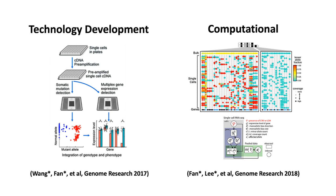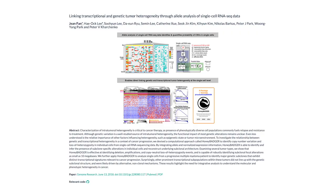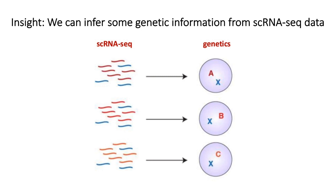Today, I will focus on briefly discussing the computational approach, but you can always check out either of these papers below in the description for more detailed information. As detailed in our paper, linking transcriptional and genetic tumor heterogeneity through allele analysis of single cell RNA sequencing data published in Genome Research in 2018, we developed a computational method called HoneyBadger to infer some genetic information directly from single cell RNA sequencing data.